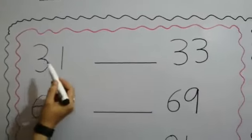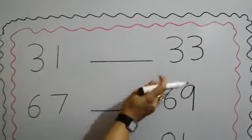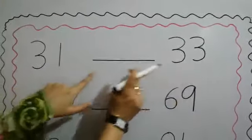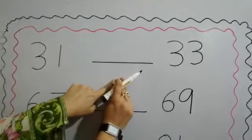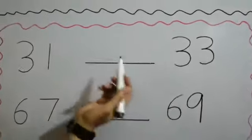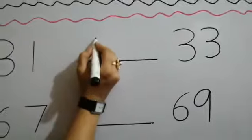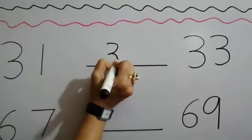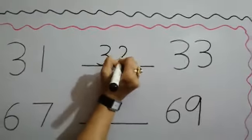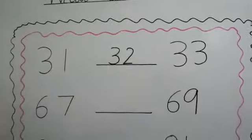Now, let me know what comes between. Between means in the center, 31 and 33. Which number will come between? The answer is 32. This is our number between.